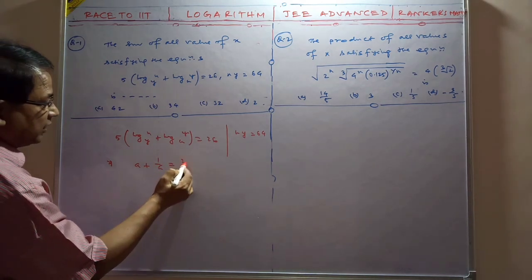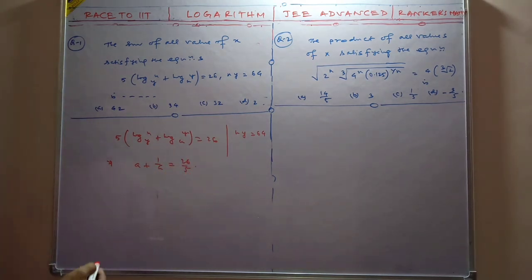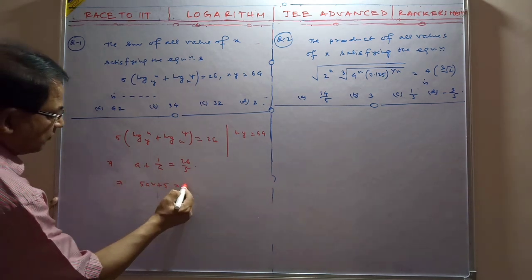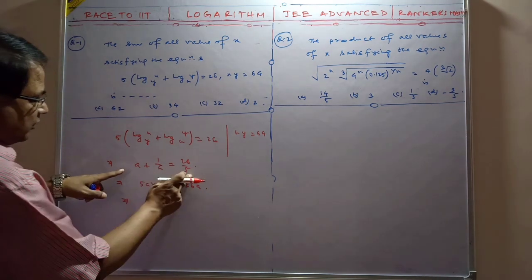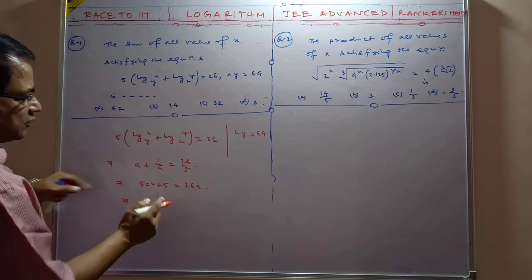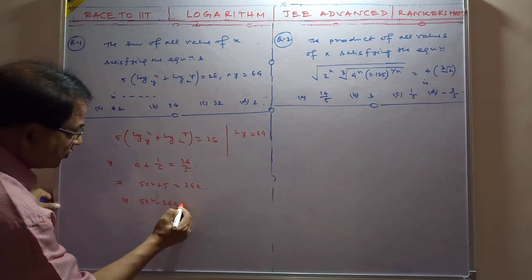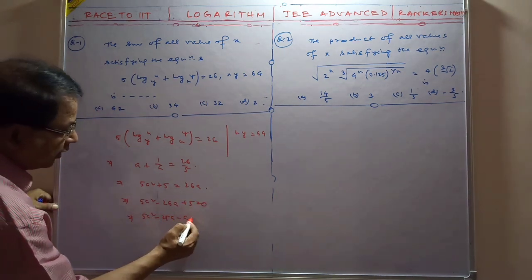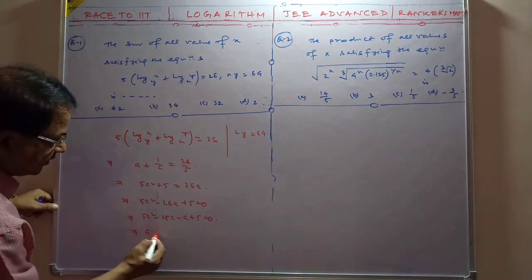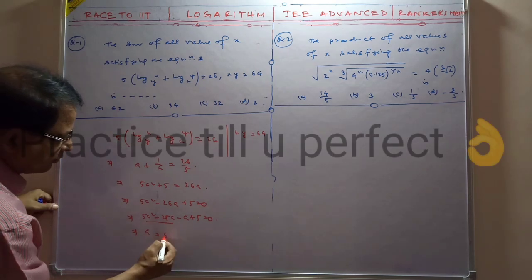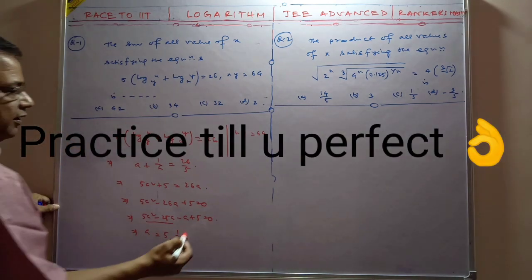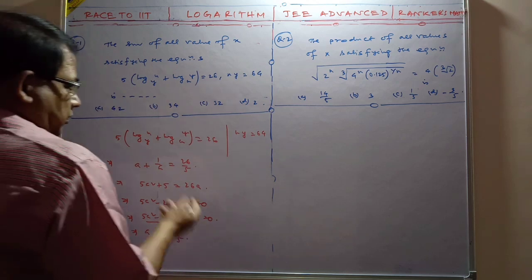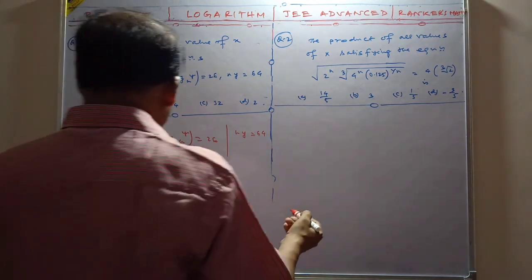So suppose I consider log_y(x) = a, then log_x(y) = 1/a. The equation becomes a + 1/a = 26/5. So that gives us 5a² + 5 = 26a, which means 5a² - 26a + 5 = 0. Factoring: 5a² - 25a - a + 5 = 0. And here xy = 64.